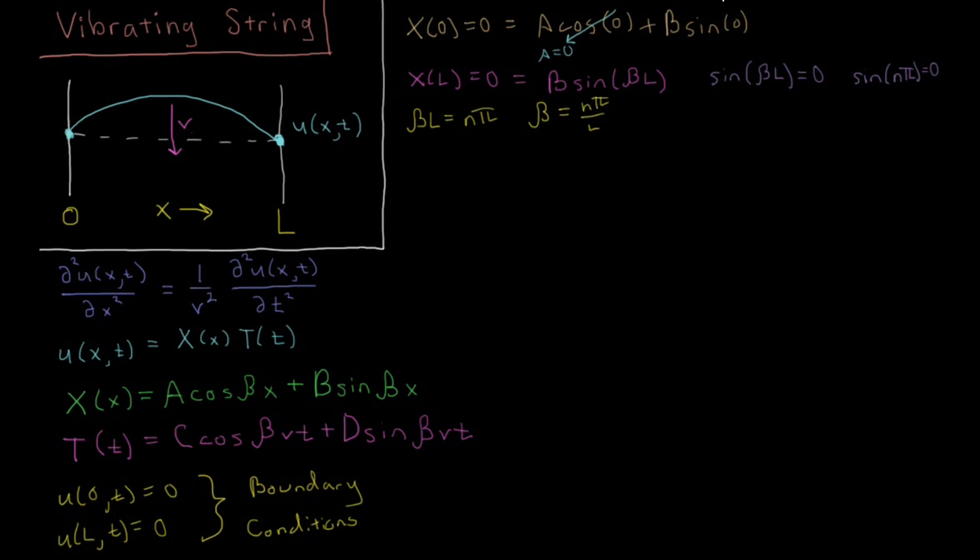We now know since A equals zero and beta equals n pi over L, that our spatial function equals a constant times sine n pi and then the x part over L. So this is the spatial part of our function. Then adding in time to that, this time part, we can't get much more specific than that. We know what the value of beta is so we can throw that in there as well.